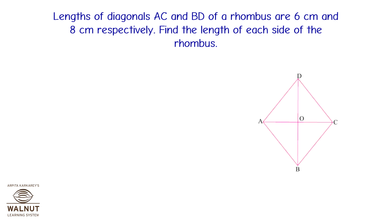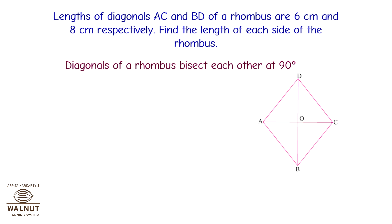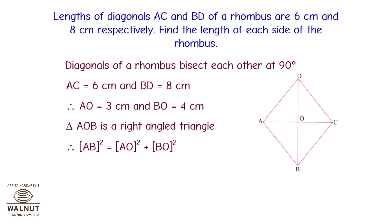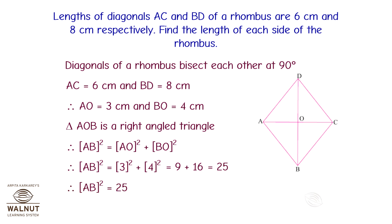The lengths of diagonals AC and BD of a rhombus are 6 cm and 8 cm respectively. Find the length of each side. Diagonals of a rhombus bisect each other at 90°. So AO = 3 cm and BO = 4 cm. Triangle AOB is right-angled, so AB² = AO² + BO² = 3² + 4² = 9 + 16 = 25. Therefore AB = 5 cm. Each side of the rhombus is 5 cm.